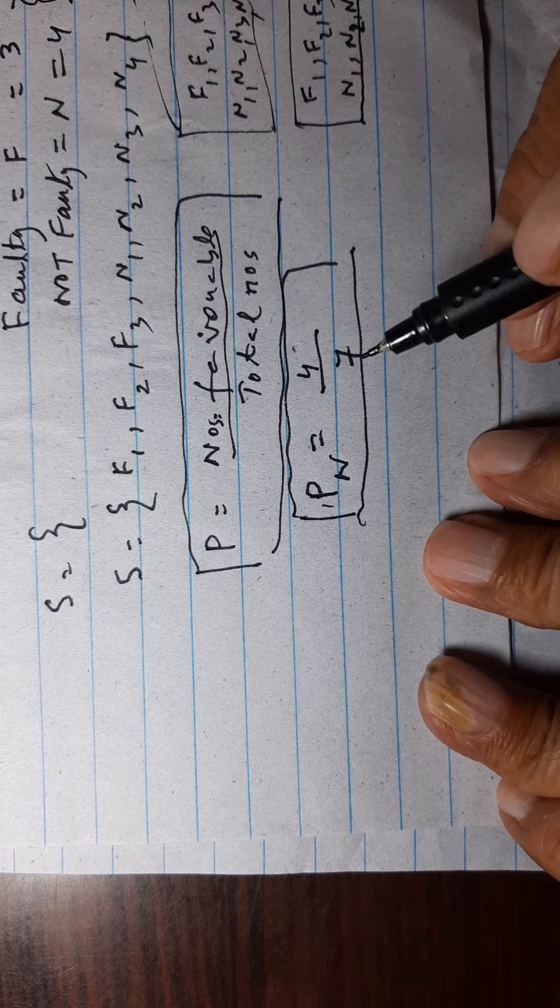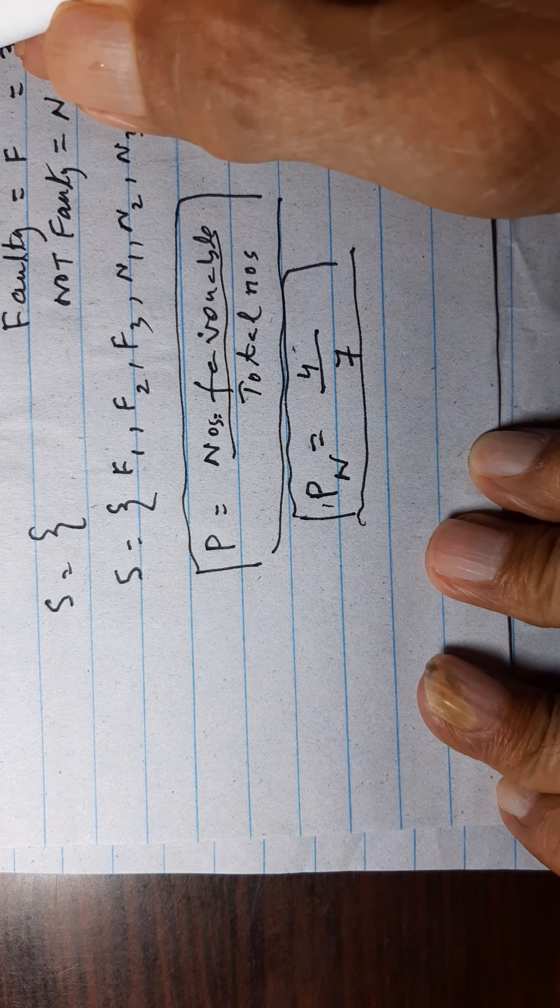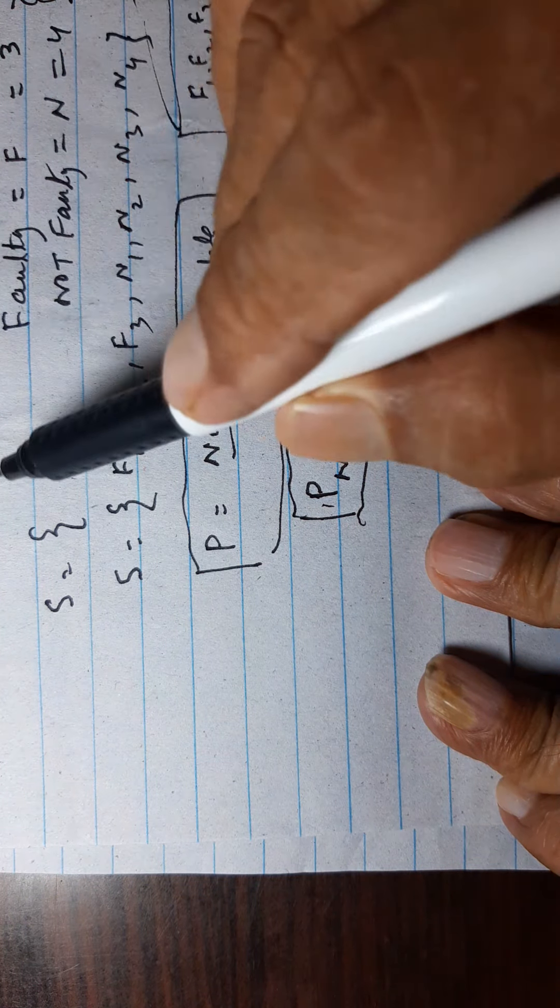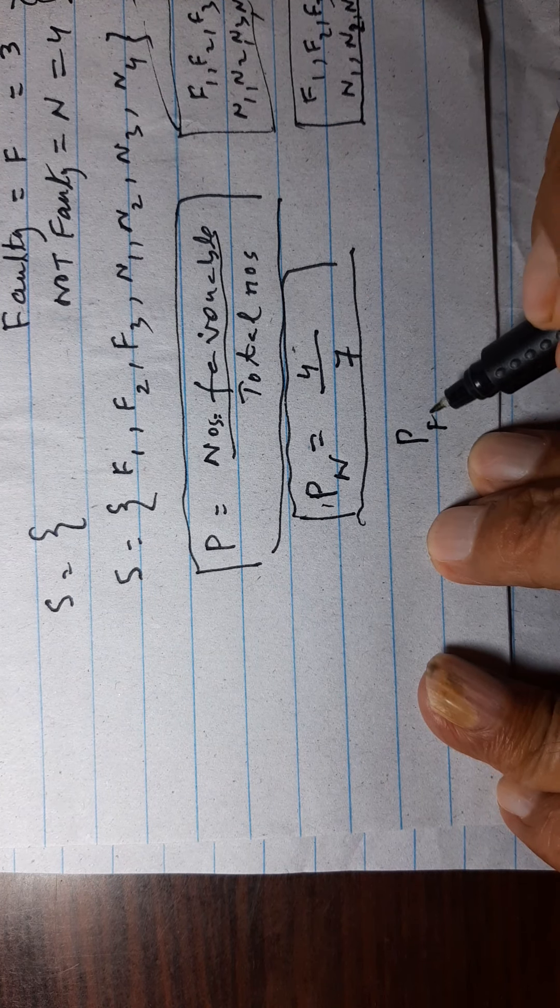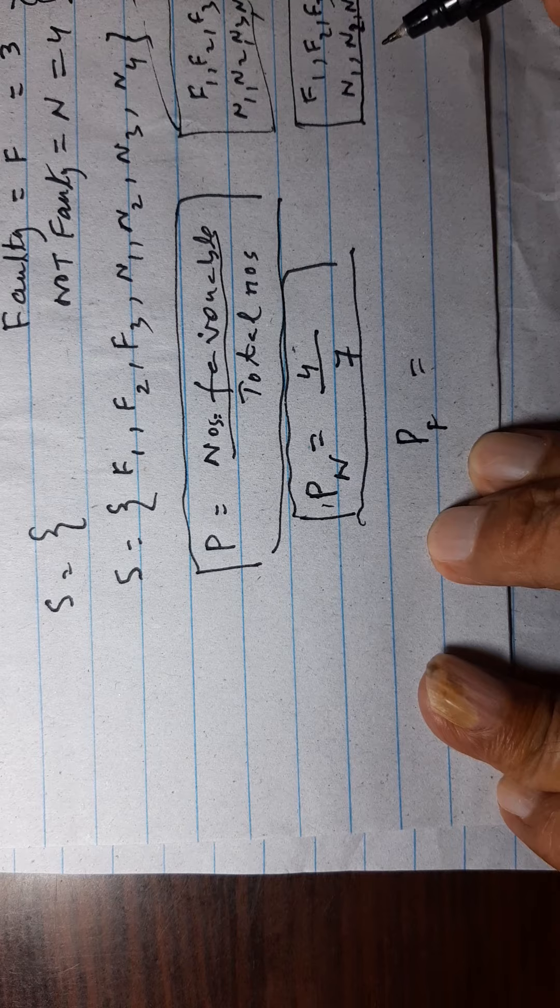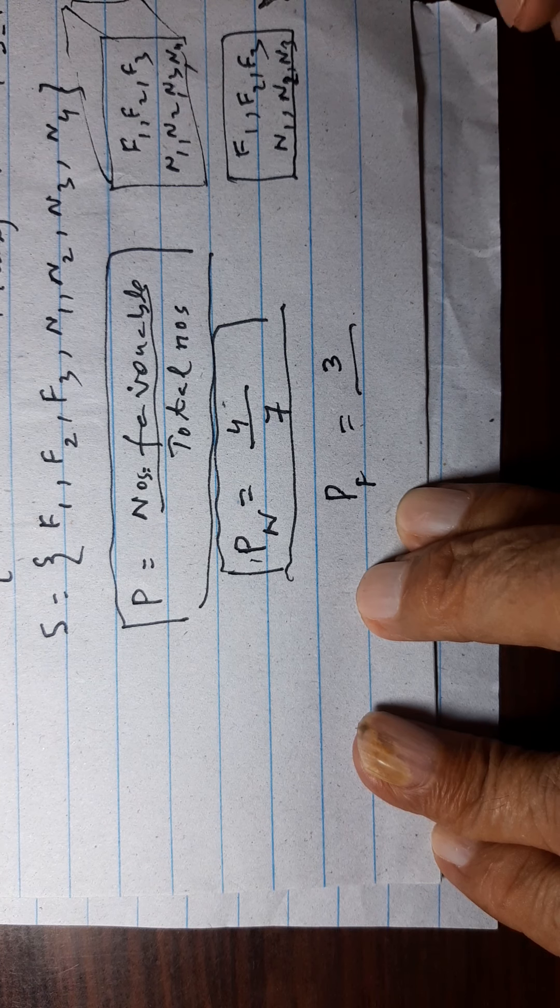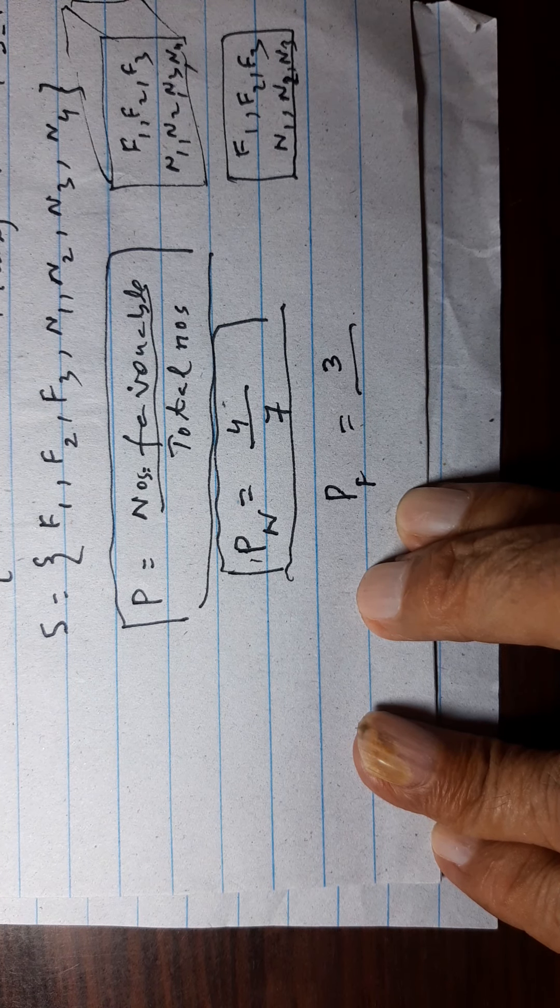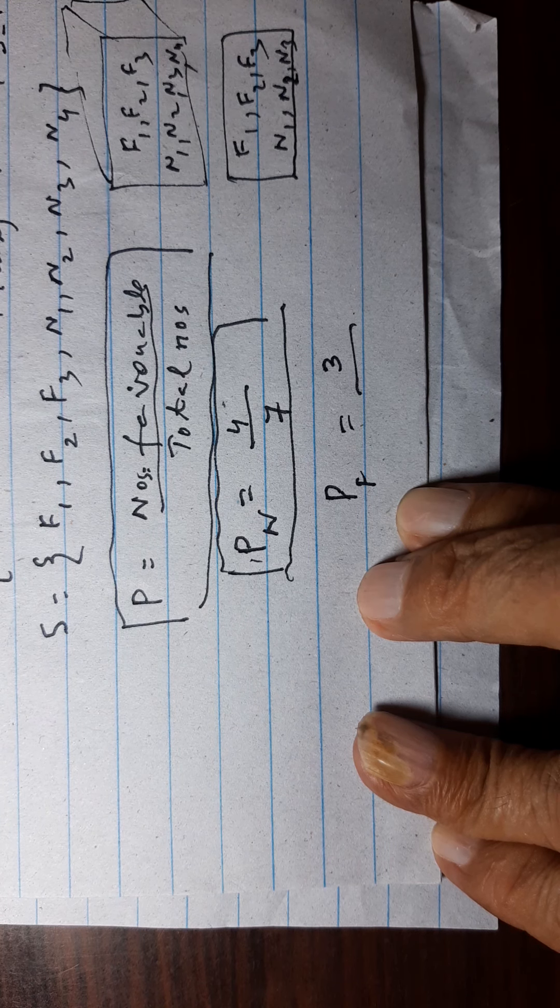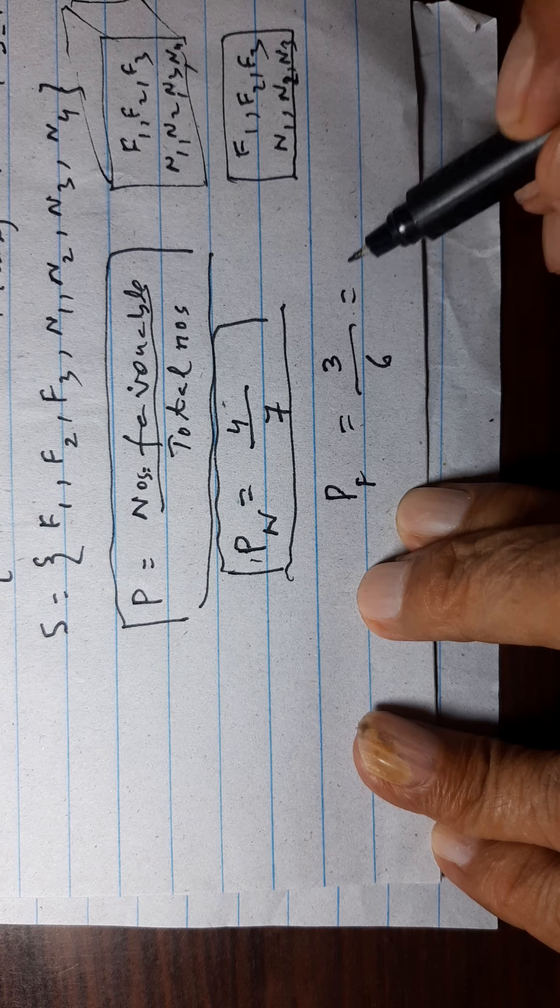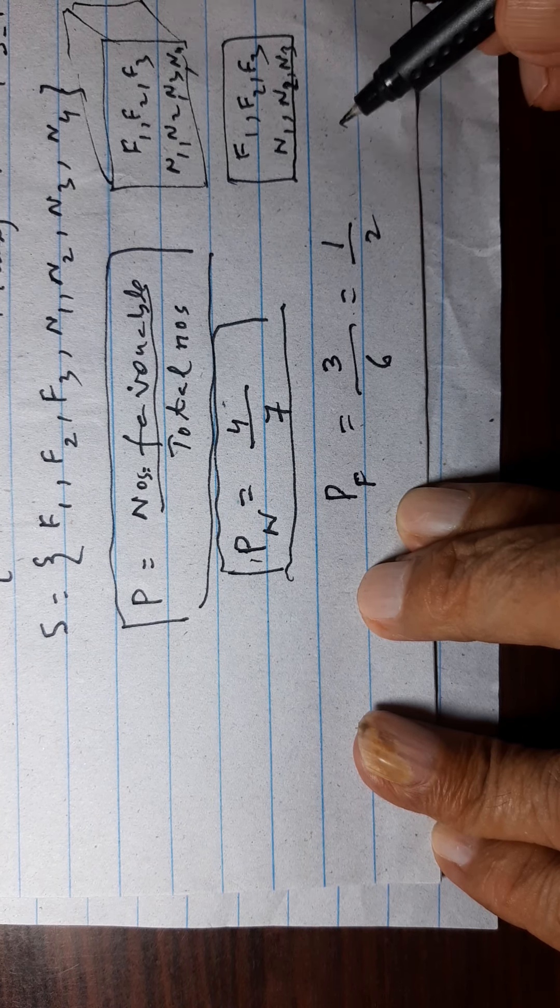Using set notation, find the probability that the second pen drawn is faulty. How many faulty pens are here? Faulty pens is now 3. Previously we had 7 pens; we have already drawn one. Now total is 6 pens. Therefore, the probability of faulty pens will be 3 over 6, which equals 1 by 2. This is the answer.